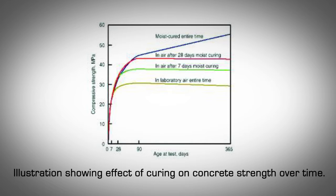Entrained air consists of microscopic air bubbles introduced in concrete by adding certain admixtures. The microscopic bubbles provide space within the paste to relieve hydraulic pressure when concrete freezes in cold weather. Without the bubbles, the paste may crack when it freezes, because water expands 9% in volume when it turns to ice. Entrained air also has the effect of improving the workability of fresh concrete. Entrapped air — macro air pockets — consists of large air voids which get trapped in concrete during mixing and placing. Entrapped air lowers concrete quality and strength, and proper concrete consolidation should always be used to eliminate the air voids as much as possible.